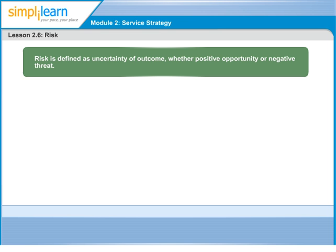Managing risk requires the identification and control of the exposures to risk, which may have an impact on the achievement of organisations' business objectives. Every organisation manages its risk. The aim is to support better decision-making.